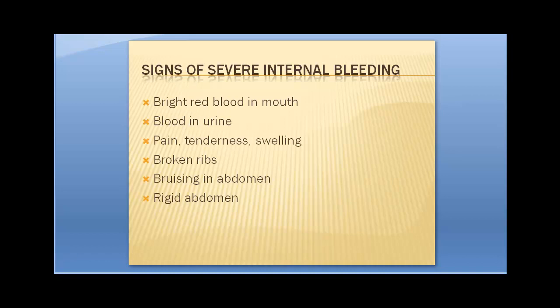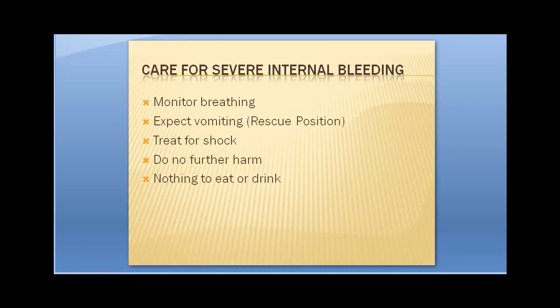Signs of internal bleeding include bright red blood in the mouth, blood in the urine, pain, tenderness, or swelling around the area. Broken ribs can cause internal bleeding, and bruising or rigidity in the abdomen suggests a hematoma. Care: monitor breathing, expect vomiting so place them in the rescue position — especially if unconscious — and treat them for shock. Control their body temperature because blood is a thermal regulator. Do no further harm and don't give them anything to eat or drink. We can't do surgery in the field.